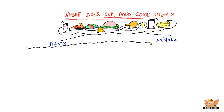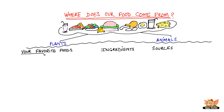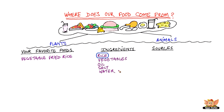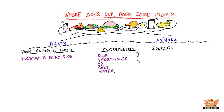Let's take some of your favorite foods and see what they are made of. In other words, let's find out their ingredients and their source. We have vegetable rice. That is made from rice, vegetables, oil, salt and water. The main ingredients in this dish come from plants.